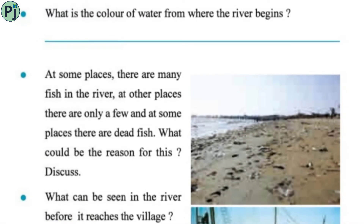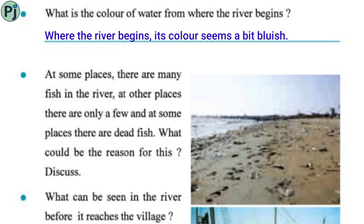What is the color of water from where the river begins? Where the river begins, its color seems a bit bluish. At some places, there are many fish in the river; at other places, there are only a few; and at some places, there are dead fish. What could be the reason for this? Discuss.